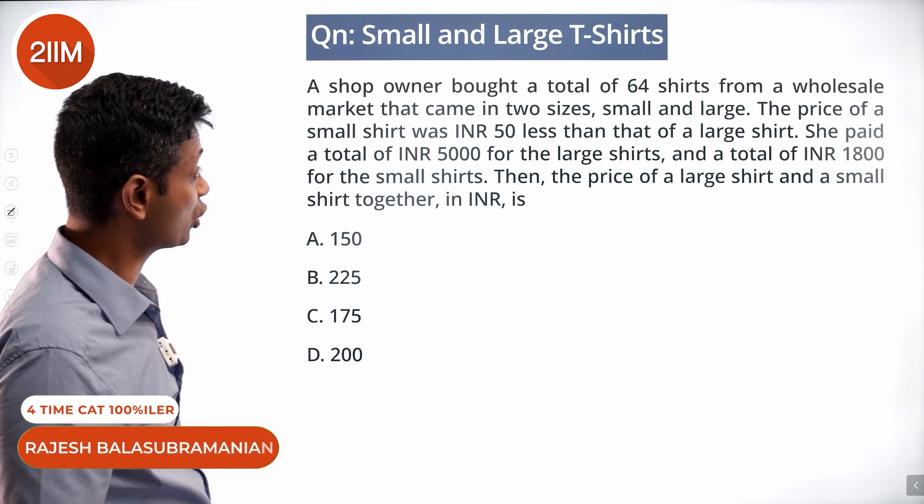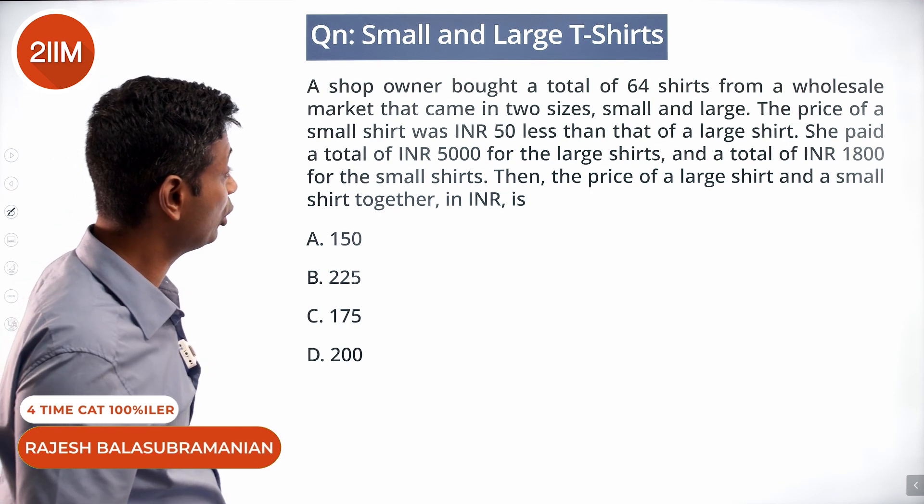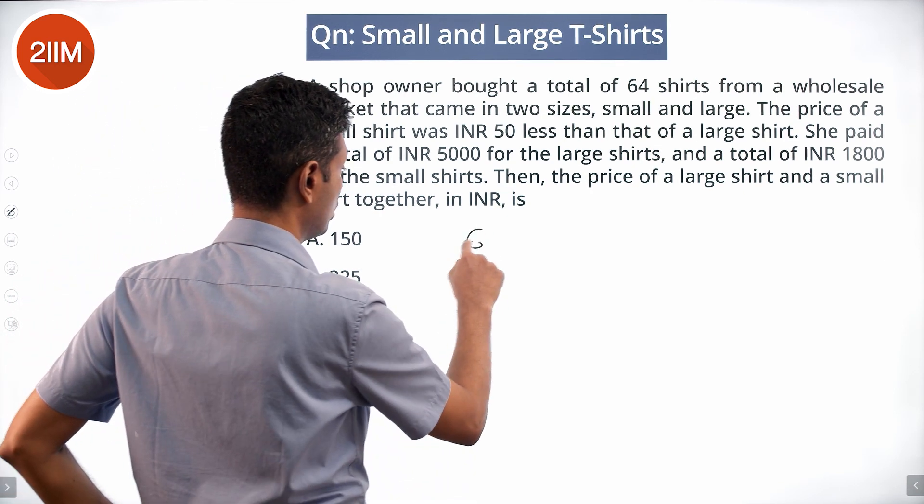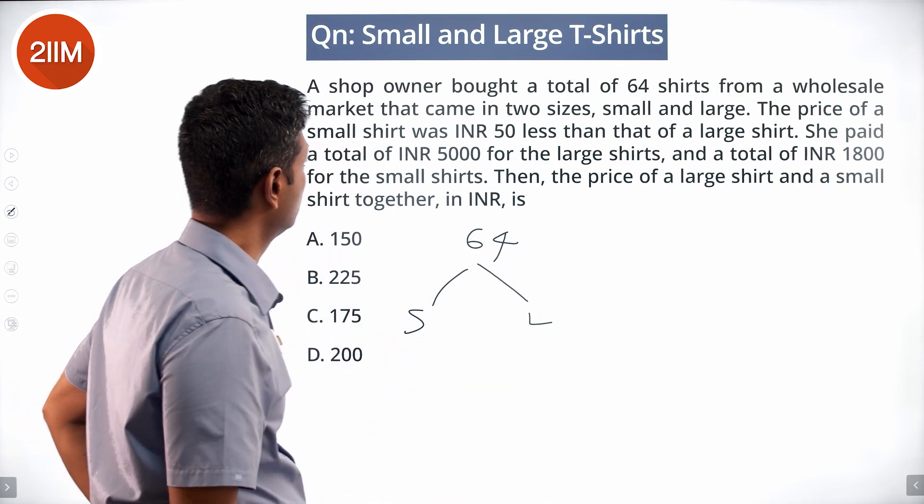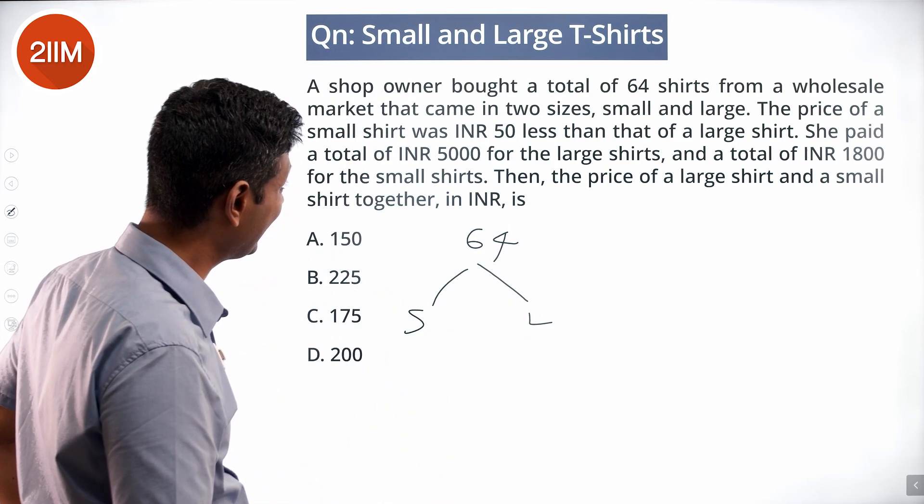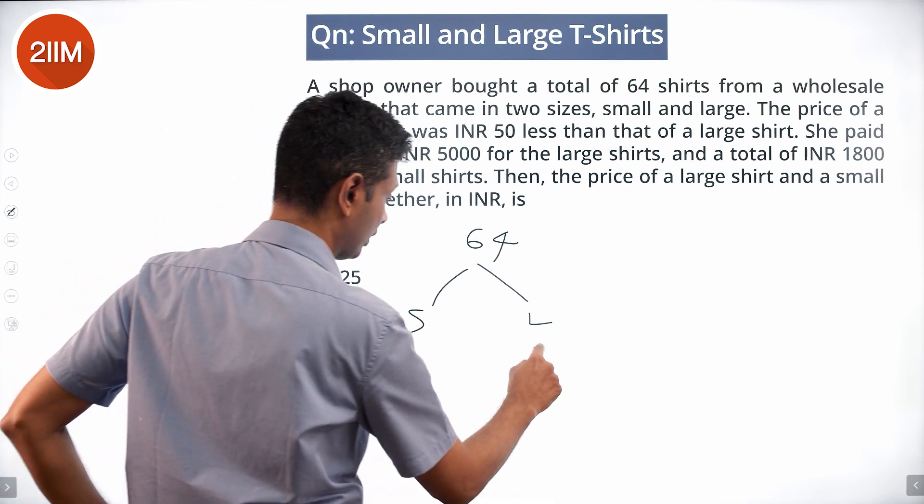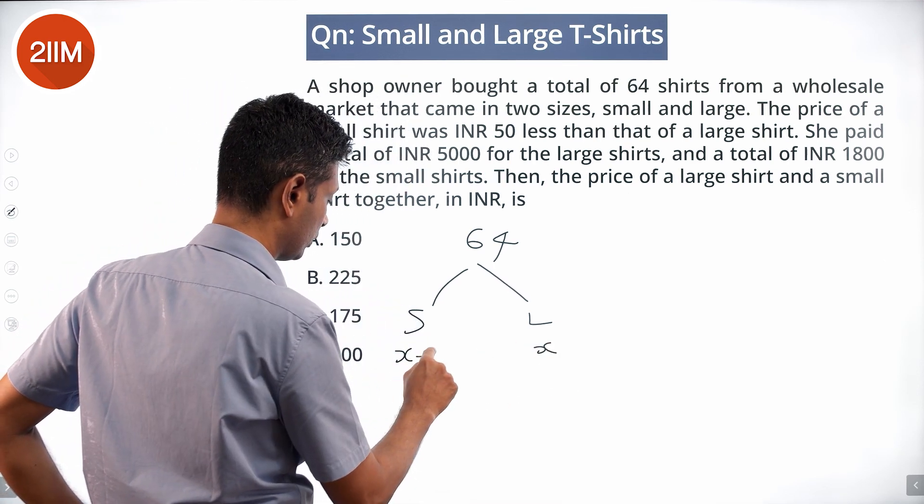A shop owner bought a total of 64 shirts from a wholesale market that came in two sizes, small and large. The price of a small shirt was X minus 50, and that of a large shirt was X.